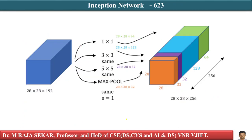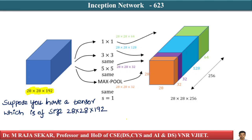Let's take the core concept itself. Suppose you have a tensor which is of size 28 by 28 by 192. If you look at any of our models, we either do 3x3 convolution, or 5x5 convolution, or we choose to do max pooling, or we can also do 1x1 convolution. So the core concept is: every time we are choosing one of the kernel sizes — the kernel size may be 1x1, 3x3, or 5x5 — or we choose max pooling.